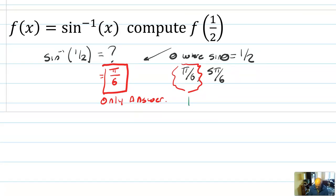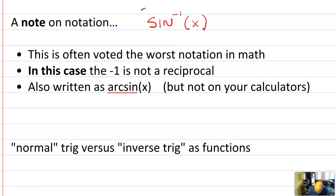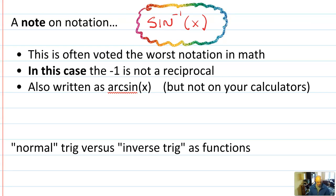Why did we choose pi over 6 instead of 5 pi over 6? We'll talk about that later in the video. But first I want to talk about some weird notational things to warn you about. This notation — the negative one superscript — is often voted the worst notation in all of mathematics, and we are unable to change it.